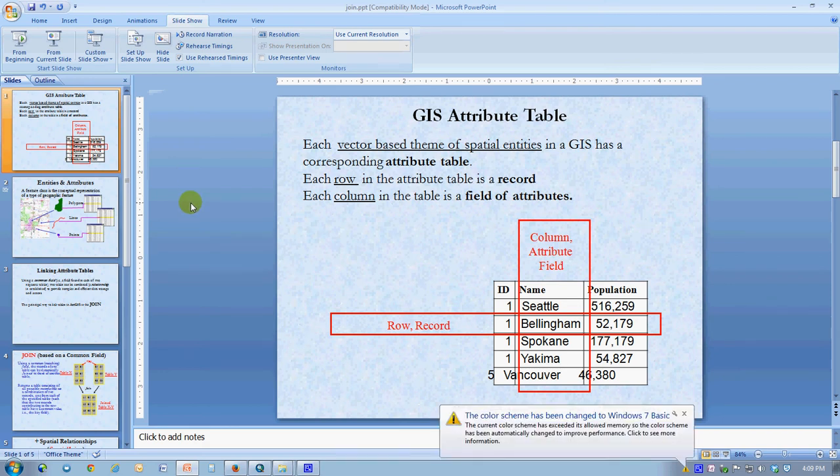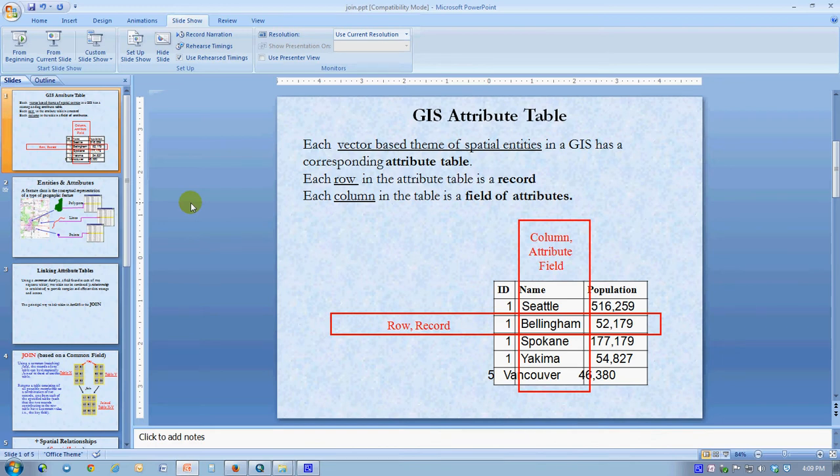This class is about what are called joins. Joins are ways in which an attribute table associated with a feature class or layer in GIS can be enhanced.